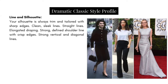Line and silhouette: the Dramatic Classic silhouette is always trim and tailored with sharp edges. Think clean, sleek lines, straight lines, elongated draping, a strong defined shoulder line with crisp edges, and strong vertical and/or diagonal lines. In three images, all these women look amazing with silhouettes in line with that description — sleek and tailored, none flaring out. Olivia Munn's pants are very elongated, coming up to her waist and going past her shoe, with a very sharp crease down the middle.